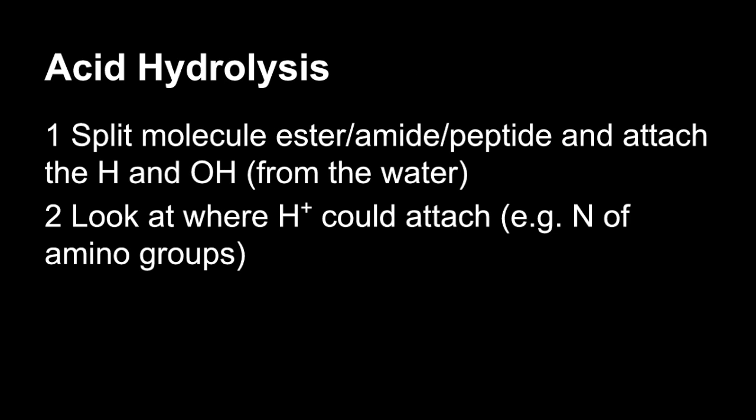If you've got acid hydrolysis, so this could be of a polyester or polyamide or something like that, or an ester itself, the first thing you would do is split the molecule up. So either the ester bond, the amide bond, the peptide bond, and attach the H and the OH from the water. And then for acid hydrolysis, you need to look at the molecule, where could you attach H pluses from those acidic conditions. So for example, it could be the nitrogen of an amino group, and then it would become N plus, with that extra H on of course.